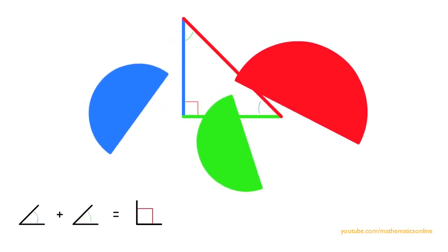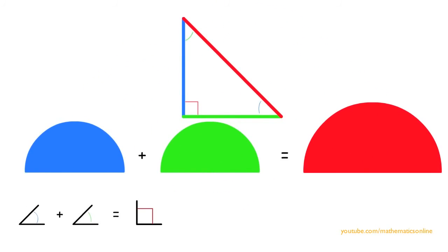So as we have seen before, the sum of the areas of the two smaller shapes is equal to the area of the larger shape, which is a direct result of the sum of the two smaller angles equal to the right angle.